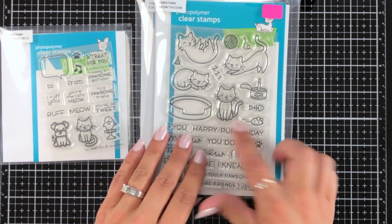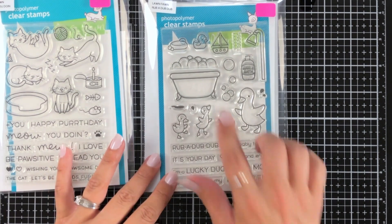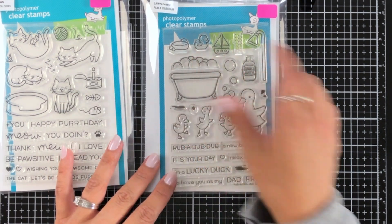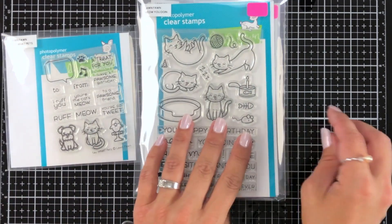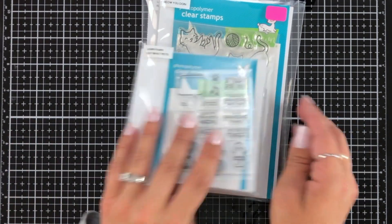First, I'll show you some of the stamp sets I'll be using. I'm using a little kitty from the Say What Pets, the Rub-A-Dub-Dub, and Meow You Doing stamp sets.